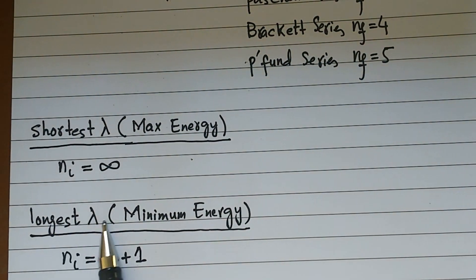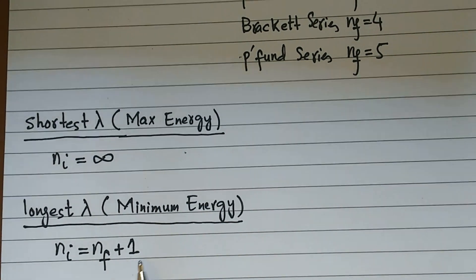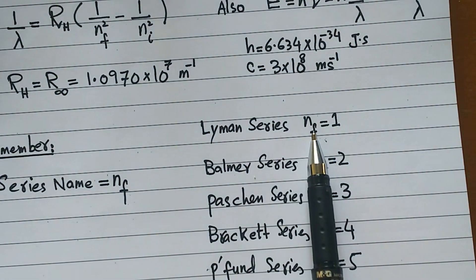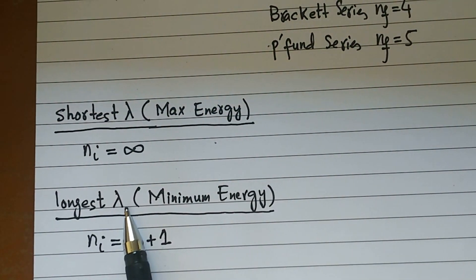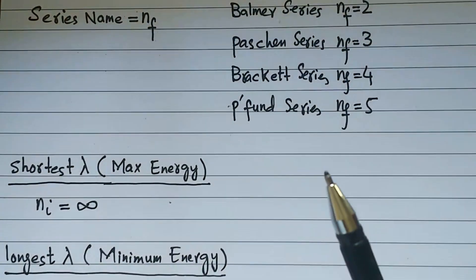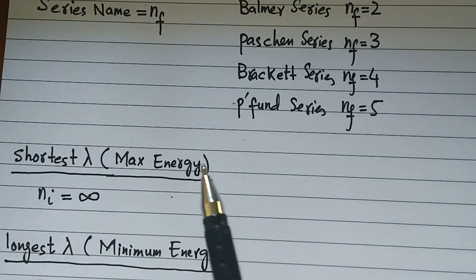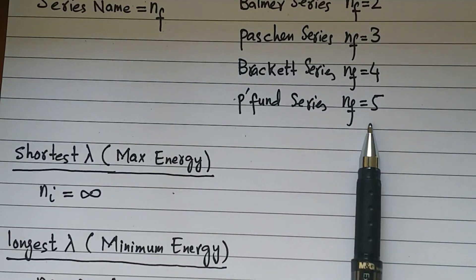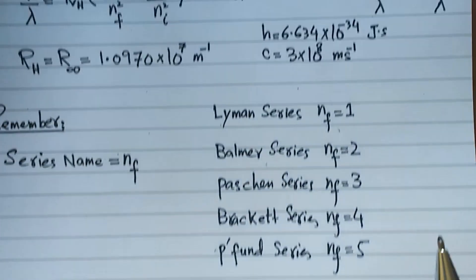When it is the longest wavelength, NI is always NF plus one. You need to know which series it is. For example, for the Lyman series NF is 1, and if the longest wavelength is asked, NI is 1 plus 1 equals 2. Similarly, if NF is 5 for the Pfund series and the longest wavelength is asked, NI is 5 plus 1 equals 6. Then put these values into the formula and directly calculate the wavelength — it is that simple.